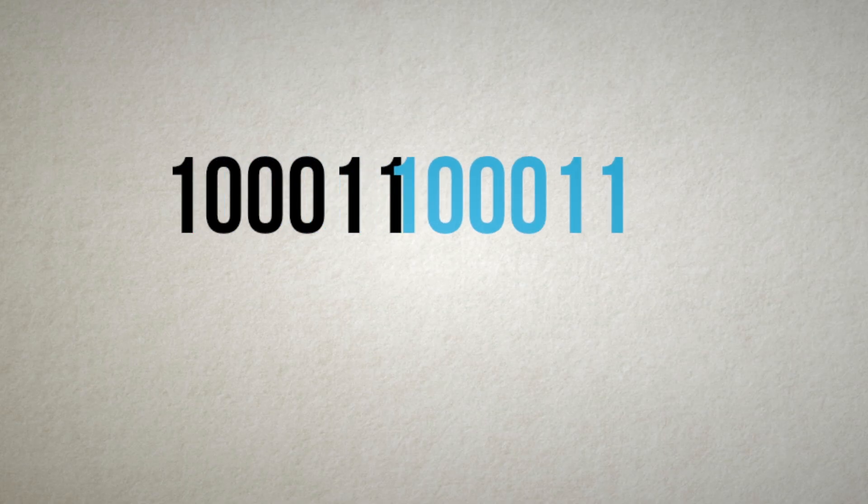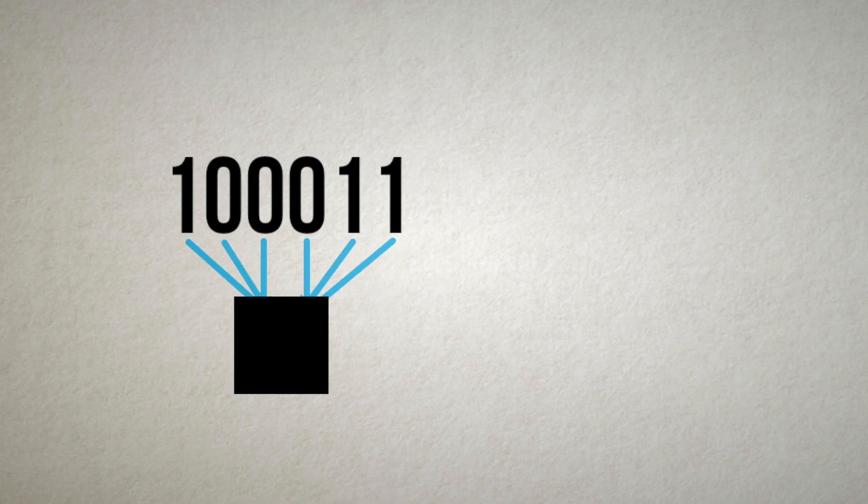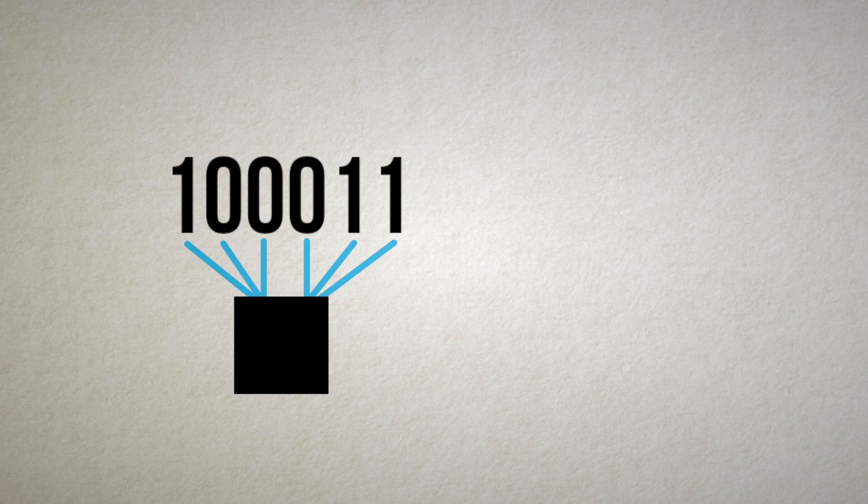First, realize that with repetition codes, each bit is only protecting one bit of information. Instead, we could define a single protection bit that protects the entire message from a single erasure, no matter where it occurs.